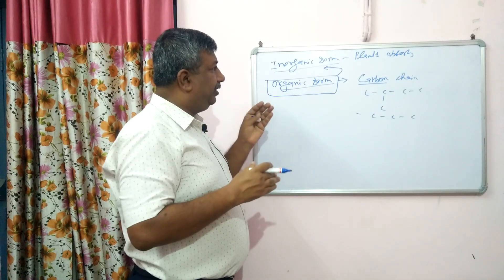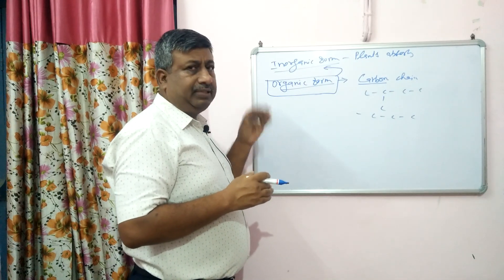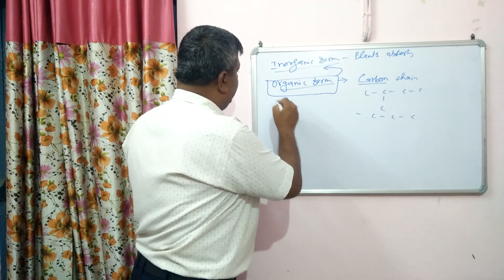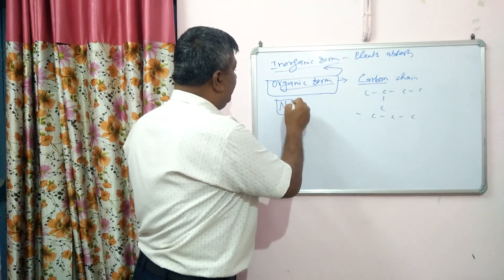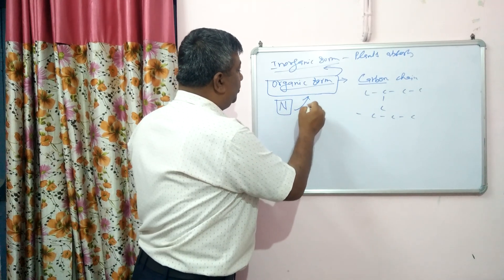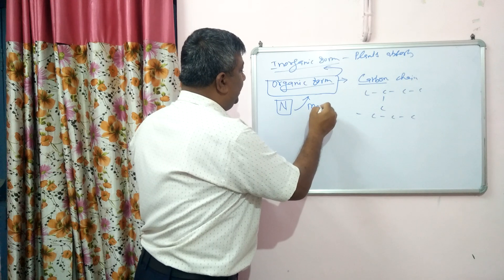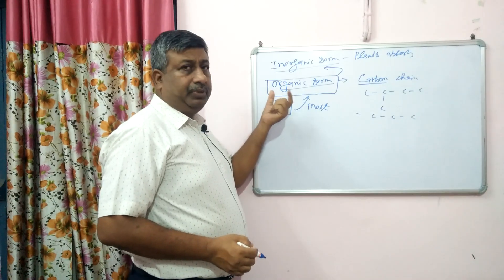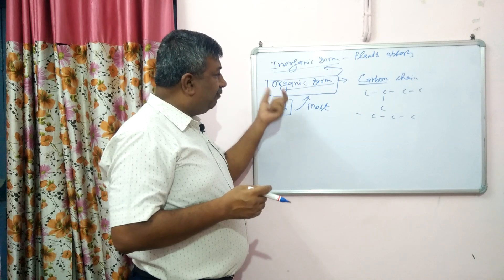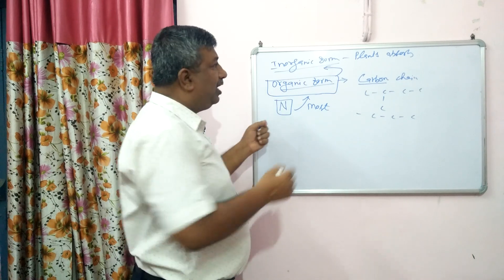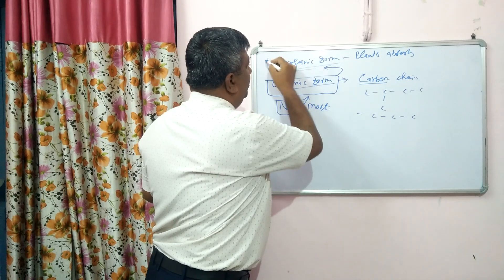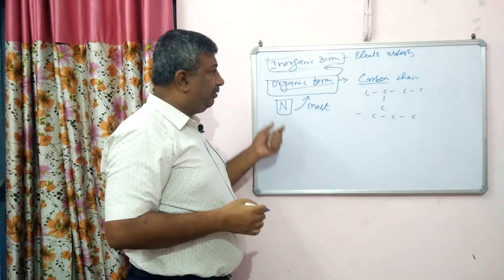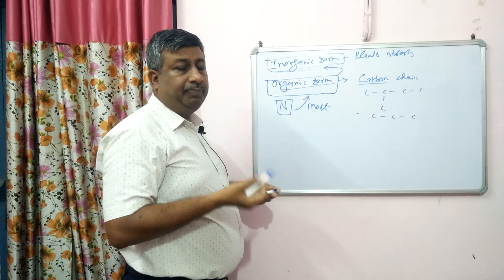There is a conversion between inorganic and organic forms, and for nitrogen this is very important because most of the nitrogen is present in organic form. In soil, organic form is present, while the plant absorbs the inorganic form, so there is a conversion between organic and inorganic form.